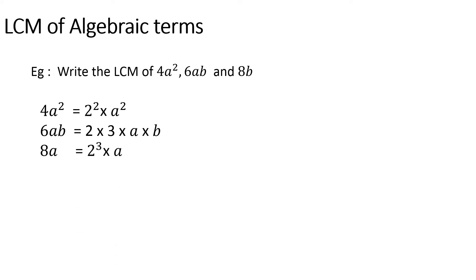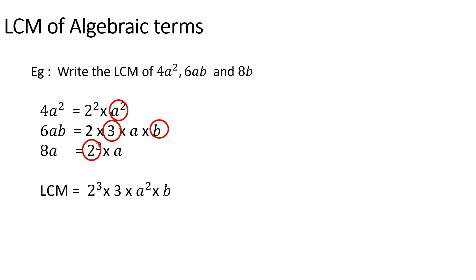Just like before, here too we spot the highest powers of each factor. The highest power of 2 is 2 to the power 3, the power of 3 is only 3 to the power 1, the power of a is a squared, and the power of b is b. The product of all these four factors is the LCM, which gives us 2 to the power 3 into 3 into a squared into b — that is 24a squared b.